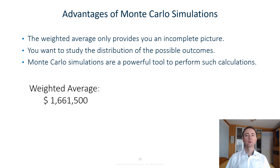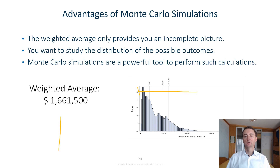In this case study, we have seen that the weighted average gives you an incomplete picture — it is just one value which might be in the center of the distribution. In order to make good decisions and have a clearer picture about the possible outcomes, you want to study the distribution and to see whether the possible scenarios are very close around the center or are very widespread around the center. And this is what Monte Carlo simulation allows you — walking from a single value to a more informed picture.